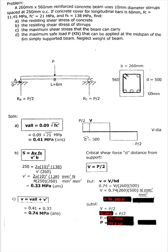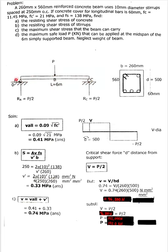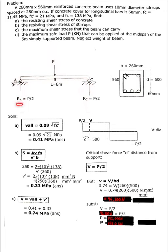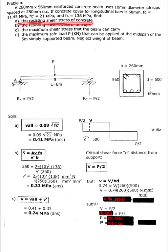Neglect the weight of the beam. You have a simply supported beam with a six-meter length — a hinge and a roller support. For support reactions, horizontal is zero since there are no horizontal forces acting. Due to symmetrical loading, your Ra and Rc are equal, so that is P over 2.